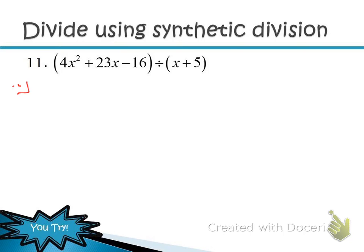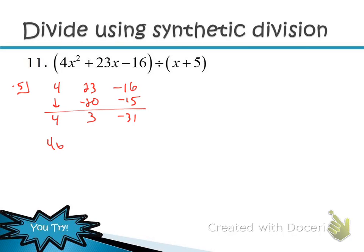For student practice: opposite of the constant is −5 in the tiny box. The dividend 4x² + 23x − 16 has all terms, so write coefficients 4, 23, −16. Bring down 4. Multiply: −5 times 4 is −20; add to get 3. Multiply: −5 times 3 is −15; add to get −31. Drop a degree — started at degree 2, so start at degree 1. Result is 4x + 3 with remainder −31, written as 4x + 3 + (−31)/(x + 5).